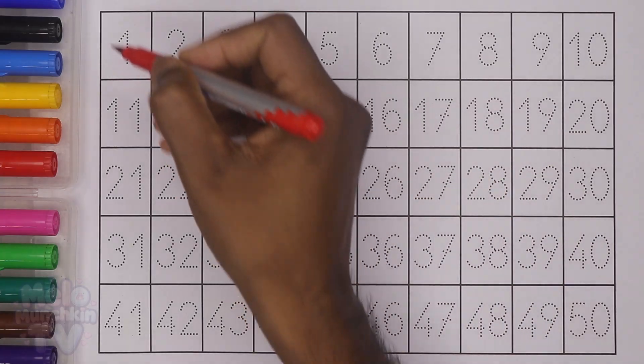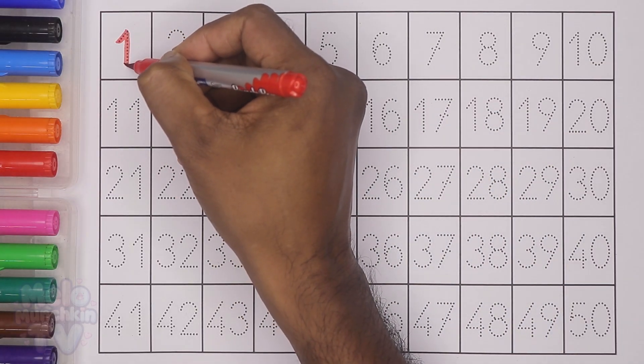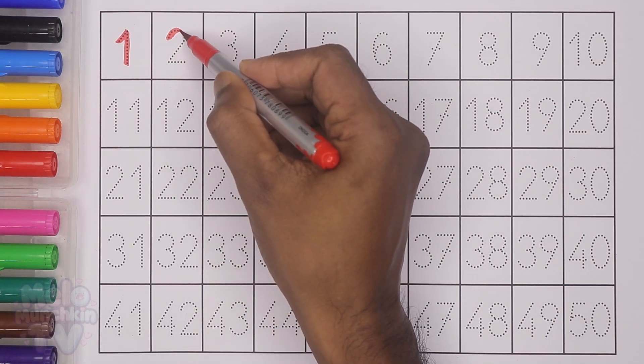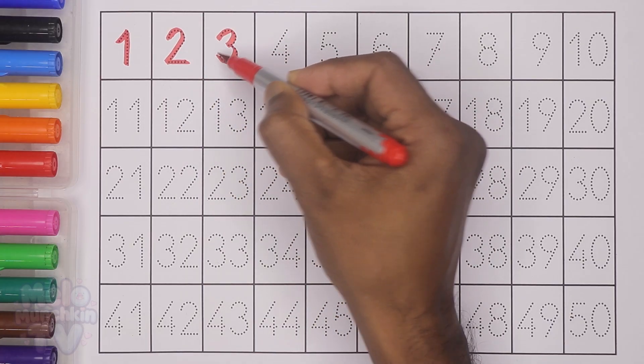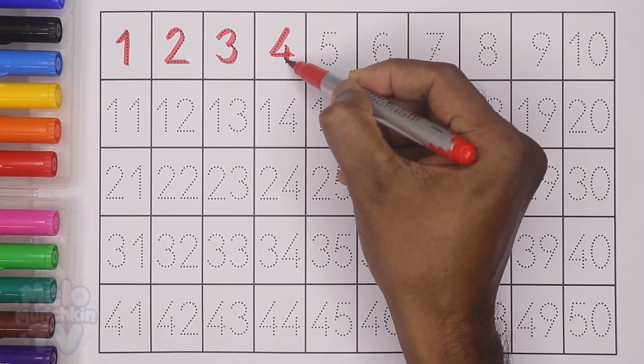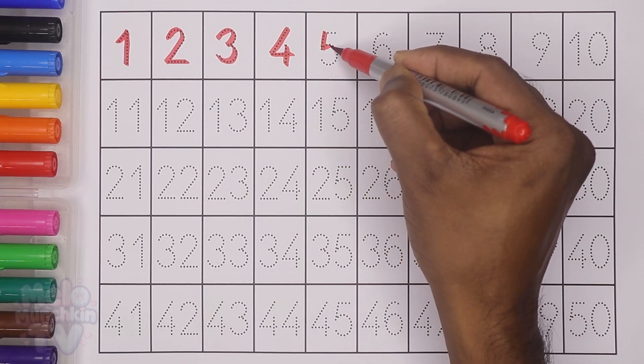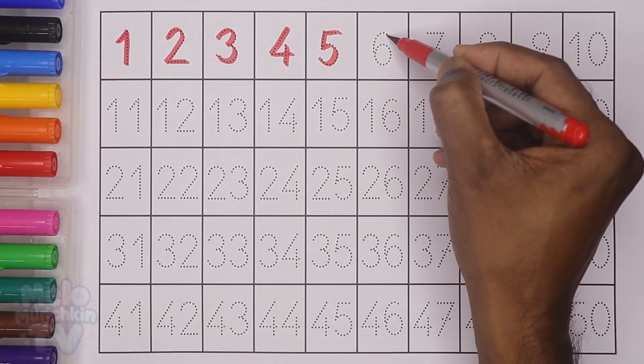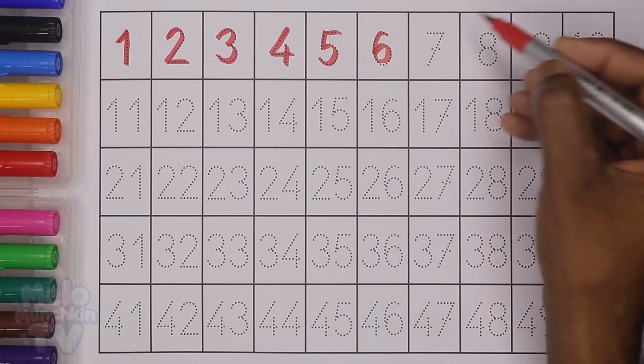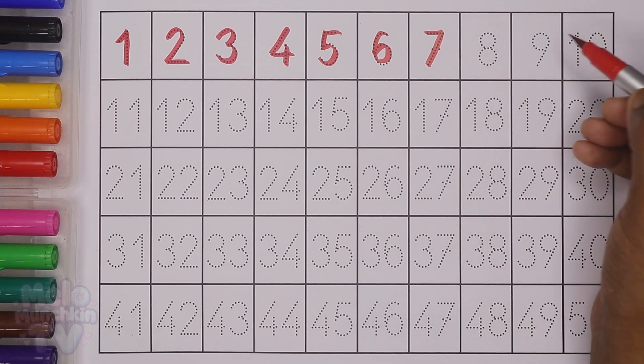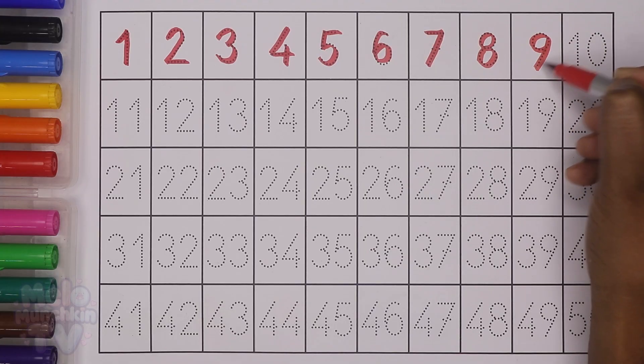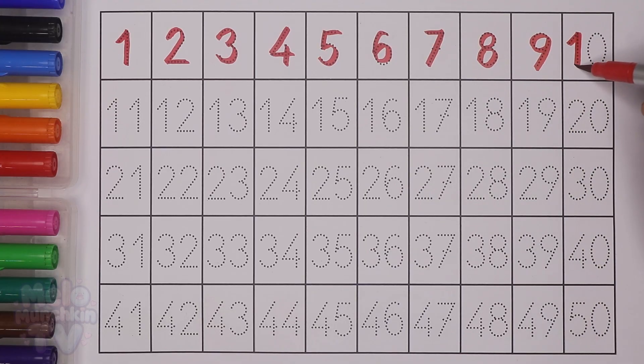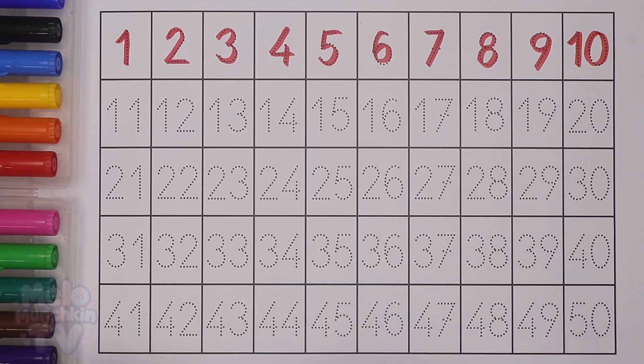Let's start with red color. I'll write the first line with red color: 1 one, 2 two, 3 three, 4 four, 5 five, 6 six, 7 seven, 8 eight, 9 nine, 10 ten.